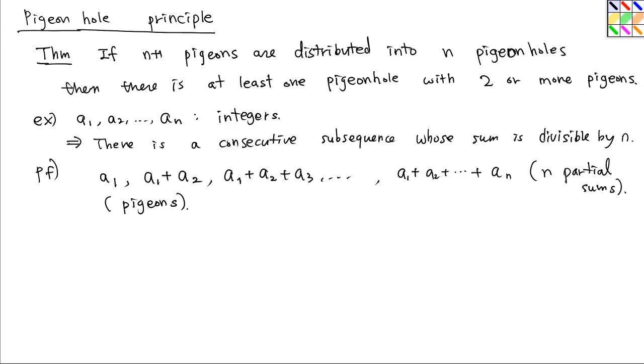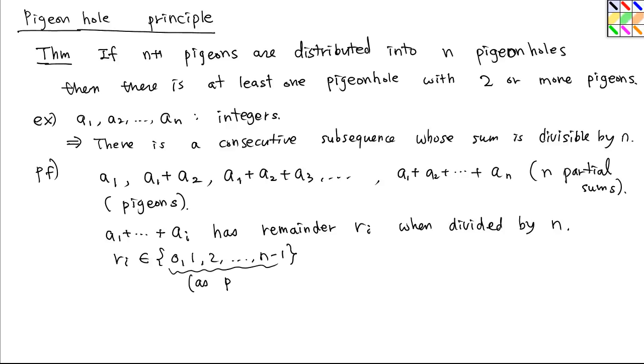We divide this number by n. So pigeonholes: If we consider the ith partial sum which is a1 + ... + ai, we can find the remainder, say ri, when divided by n. So then ri can be an integer 0, 1, 2 up to n-1. So we will consider these numbers as pigeonholes.